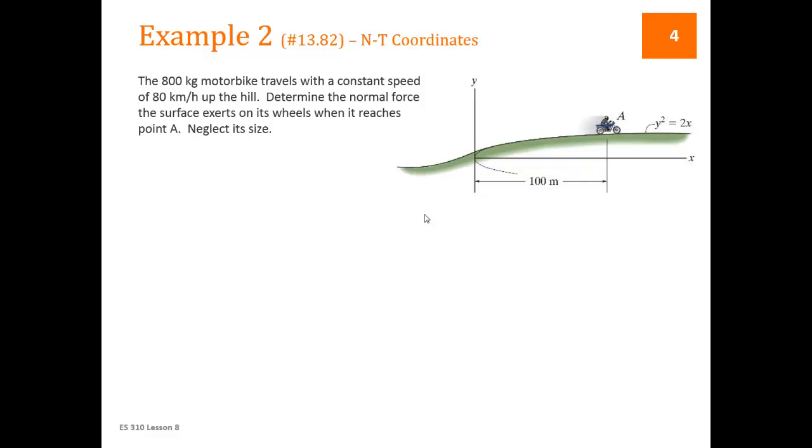Example 2 is going to use the N-T coordinates, or the normal tangential coordinates, because we're given information about this hill that our motorbike is moving on. So when we're given information about the curve, we're usually going to use the N-T coordinates.